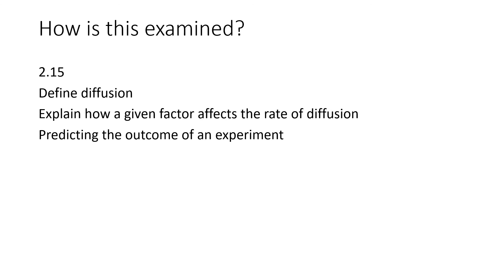So how do we examine this content? For specification point 2.15 — the brief recap we did — you might be asked to define diffusion, explain how a given factor affects the rate (moistness, distance, temperature, or surface area to volume ratio), or predict the outcome of an experiment. If you have a good understanding of how diffusion works you'll have no problem.